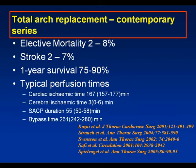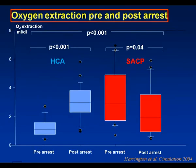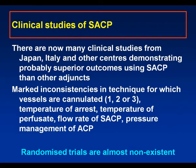We've shown before that the use of selective antegrade perfusion abrogates the oxygen extraction deficit that occurs with HCA. But in the studies of SACP there are marked inconsistencies in technique — which vessels are cannulated (one, two, or three), the temperature of corporeal arrest, the temperature of the perfusate, the flow rate, and the pressure management. And randomized trials are almost non-existent.